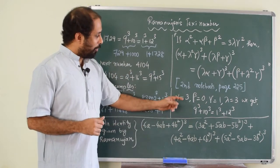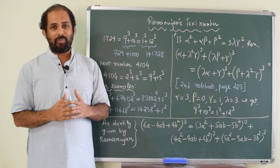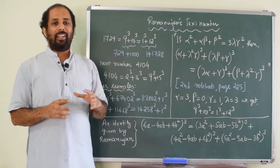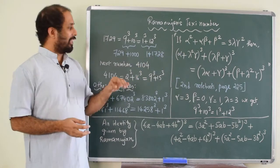For example, if you put alpha equal to 3, beta is 0, gamma is 1 and delta is 3 in this conditional identity. Then, you will get 9 cube plus 10 cube equal to 1 cube plus 12 cube which is nothing but 1729.